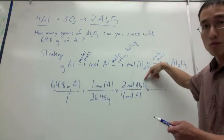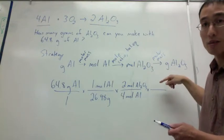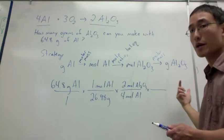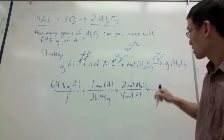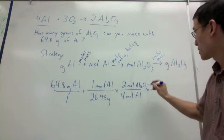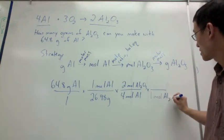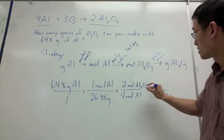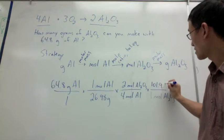Once I'm at the moles of aluminum oxide, I can then go back to grams and figure out how many grams of aluminum oxide I can make. So you can take two aluminums, three oxygens from the periodic table, add them up, you'll find that one mole of aluminum oxide is 101.96 grams.